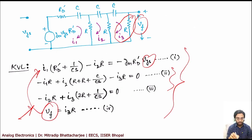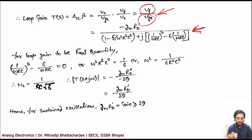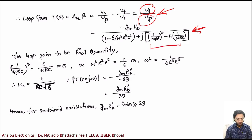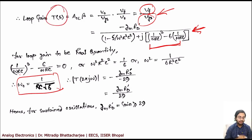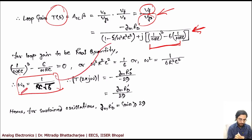Solving the four equations gives an expression for Vf/Vgs. Applying Barkhausen's criteria, the imaginary part should be equal to zero. Setting (1/ωRC)³ minus 6/(ωRC) equal to zero gives the oscillation frequency as ω₀ = 1/(RC√6), or equivalently 1/(√6 · RC).